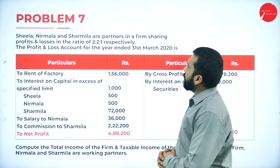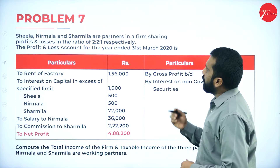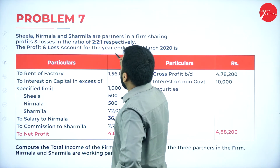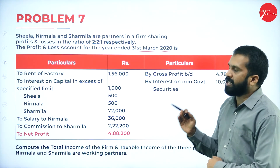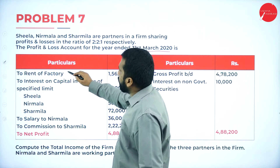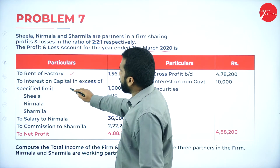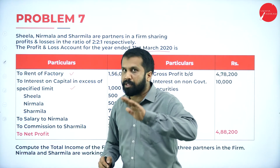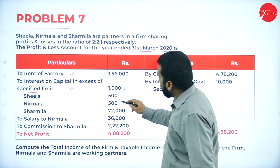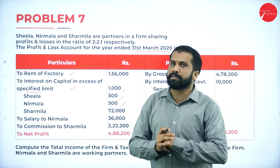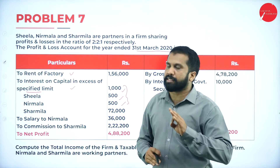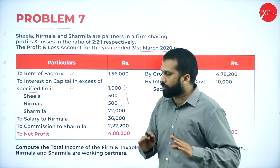Sheila, Nirmala and Sharmila are partners in a firm sharing profit and losses in the ratio 2:2:1. The profit and loss account is for the year ending 31st March 2020. In this problem, interest on capital is stated as 'excess of specified limit,' meaning whatever is given is already the excess over 12%, so we can take it directly without any extra calculation.